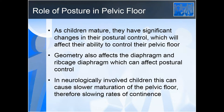As children mature, they have significant changes in their postural control, which can affect their ability to control their pelvic floor. Geometry also affects the diaphragm and ribcage, which can affect postural control. Children with severe scoliosis will have their diaphragm and pelvic floor in an inopportune position, potentially developing continence later or developing constipation. In neurologically involved children, the decrease in posture and anticipatory control can cause slower maturation of the pelvic floor, slowing rates of continence and the ability to toilet train.